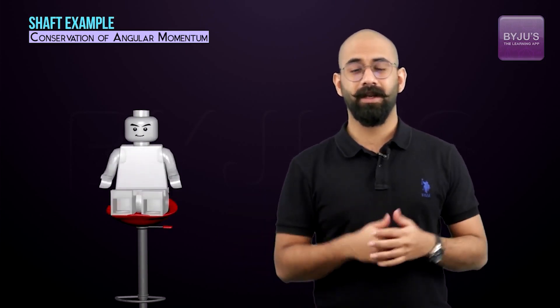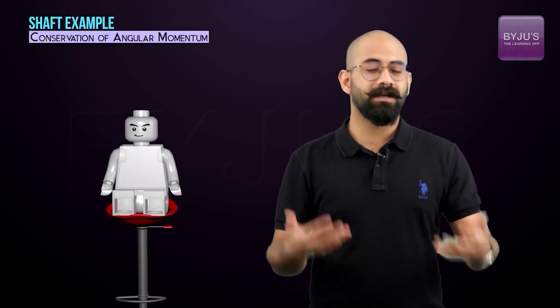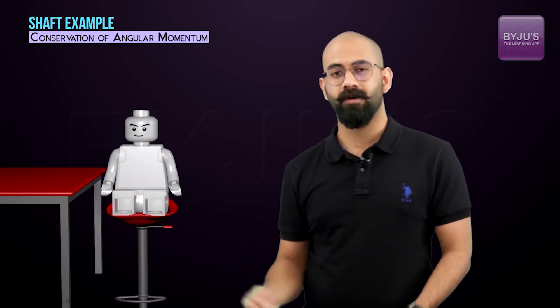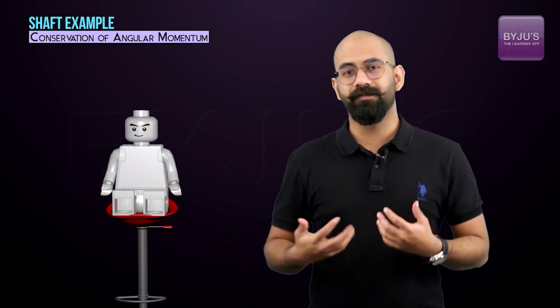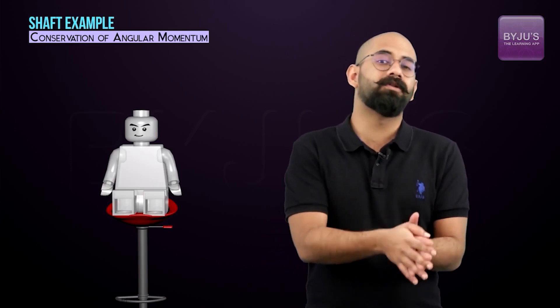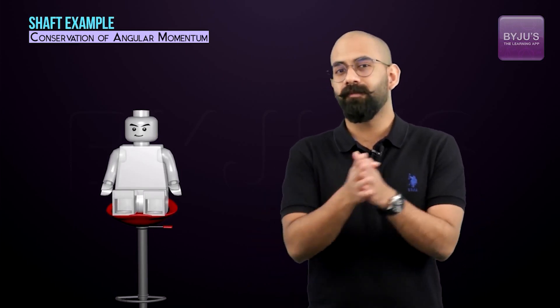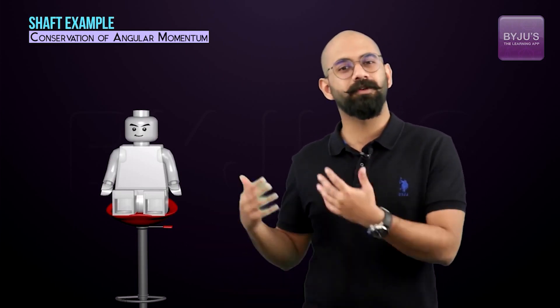Now we can answer the bar stool question. When I sit on the stool, the system consists of me plus the chair. There is no way to produce a net external torque unless I touch something like the ground or a table. Therefore there can be no change in angular momentum. Since the initial angular momentum of the system was zero, the final angular momentum must also be zero — so I cannot rotate.